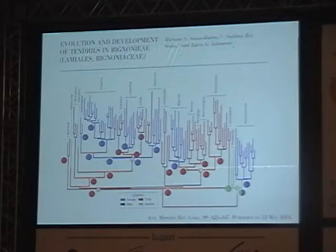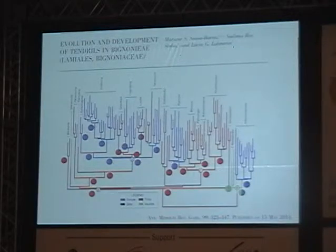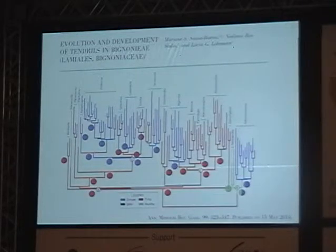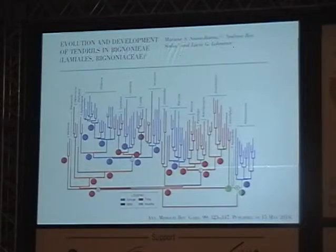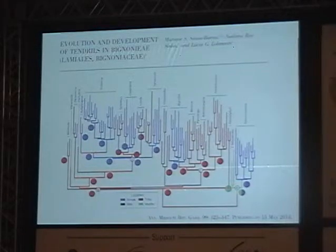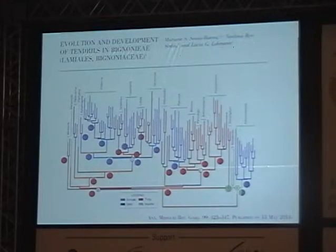We then looked at tendril evolution. We first reconstructed the pattern of evolution of tendrils in the group and found that the ancestral condition was trifid tendrils. Tendrils are structures that help climbers ascend. Everyone always thought the ancestral condition would have been simple tendrils that become more complex over time, but what we find is that the ancestral condition is trifid tendrils, and then there are multiple independent evolutions of simple tendrils within this group.